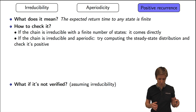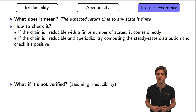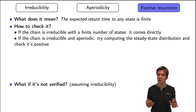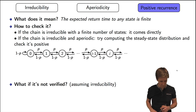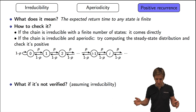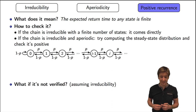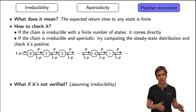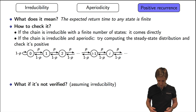Assuming the chain is irreducible and aperiodic, a way to verify positive recurrence is to just try computing the steady-state distribution. We have here a Markov chain with an infinite number of states. It's irreducible — from any state we can go to any other state. It's aperiodic, because we have a self-transition with probability 1 minus p from state 0 to itself, assuming p is neither 0 nor 1. So our chain is irreducible and aperiodic, and we try to compute the steady-state distribution.